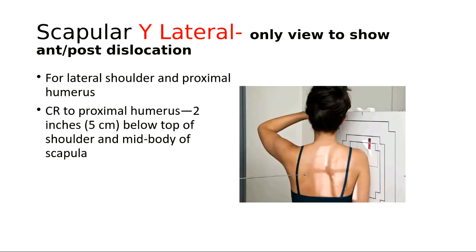The last routine view is the scapular Y view, found on page 201. It's a PA oblique — notice the patient is PA. In the field, technologists often do these AP, but the registry does not recognize them done AP. The problem with doing them AP is significant OID and magnification on the image. This is the only view that will show an anterior-posterior dislocation, and it's done to show fractures or dislocations of the proximal humerus and scapula.